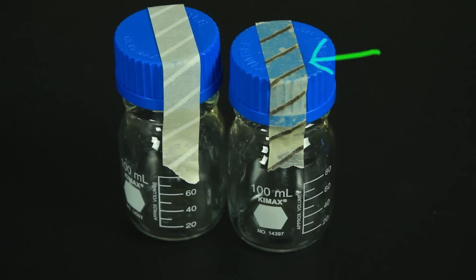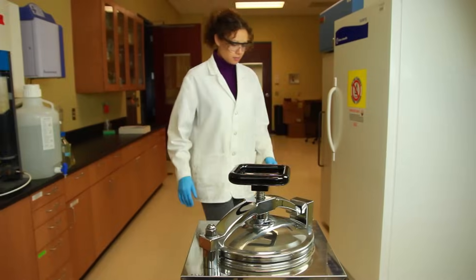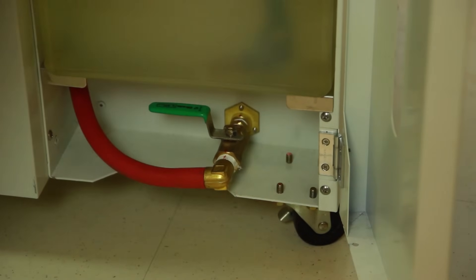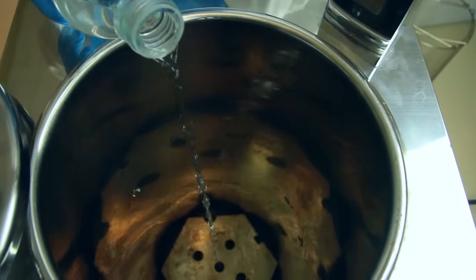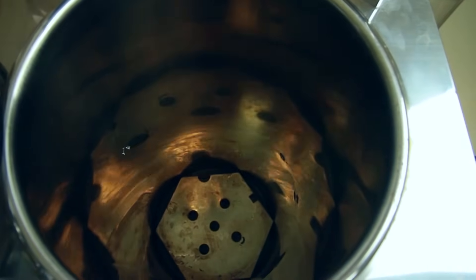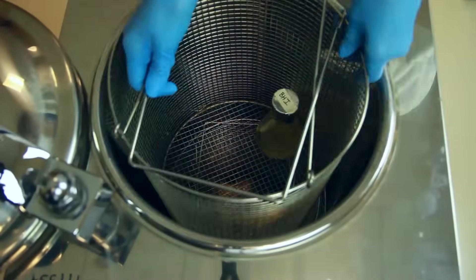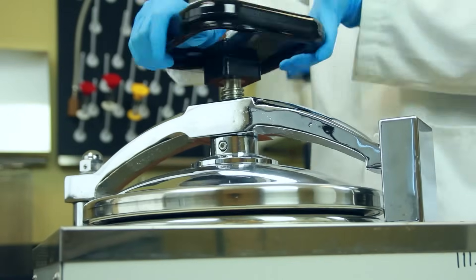Turn on the power and make sure the drain valve is closed. Add deionized water to the level indicator line. Place the flask of culture media into the basket, insert the basket, close the lid, and turn the handle to create an airtight seal.